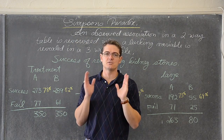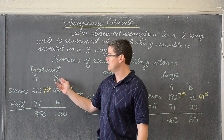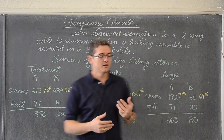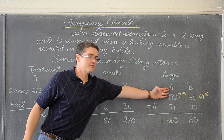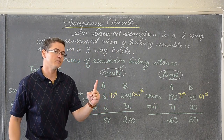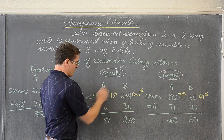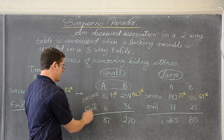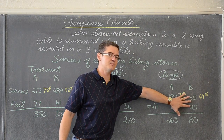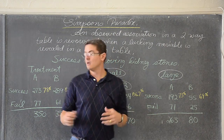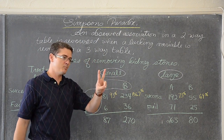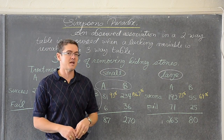That observed association is reversed when a lurking variable is revealed in a three-way table. A three-way table is simply just two two-way tables. A two-way table has treatment type and success rate — those are your two variables, hence the name two-way table. Now if I reveal this three-way table, we have the added variable of whether it is a large or small stone. Under small stones we have our original two variables of treatment type and success or failure, and the same design under large kidney stones. So we have three variables: stone size, treatment type, and success rate — hence it is called a three-way table.